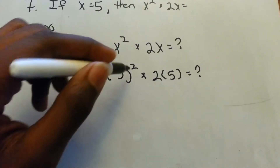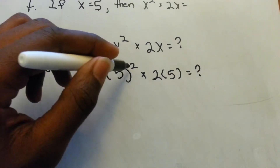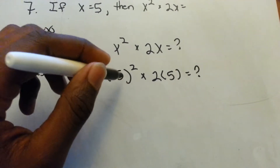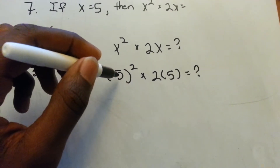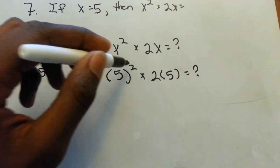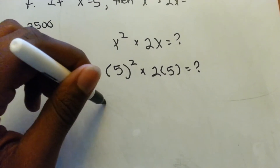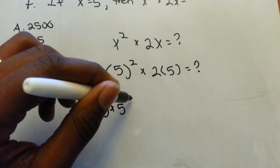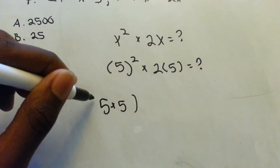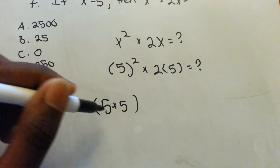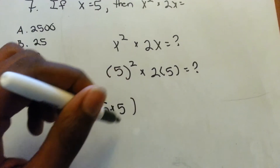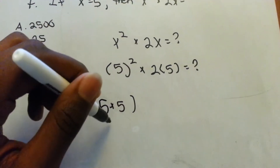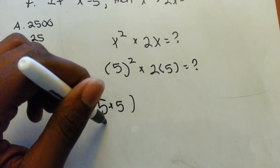5 squared — that exponent up there means you're multiplying this number by itself 2 times. That means 5 times 5. So 5 times 5 is 25.